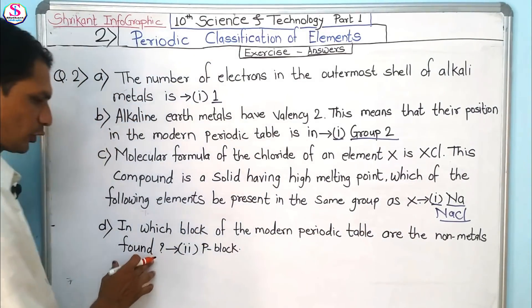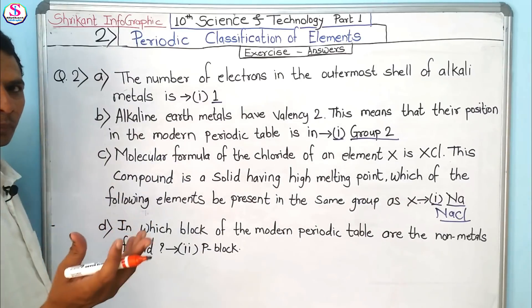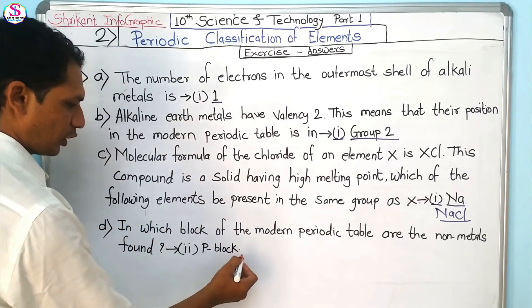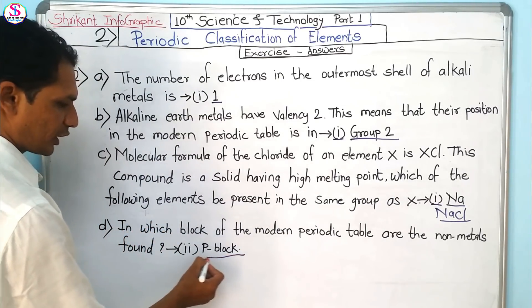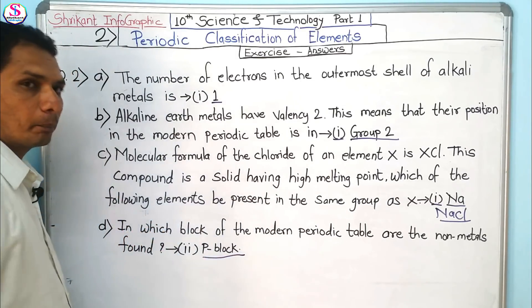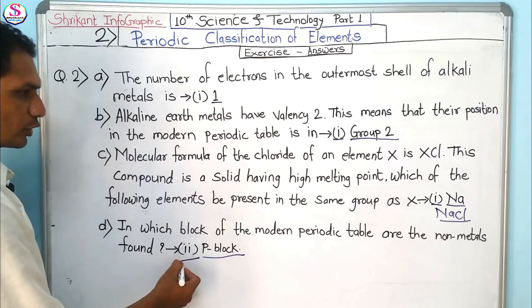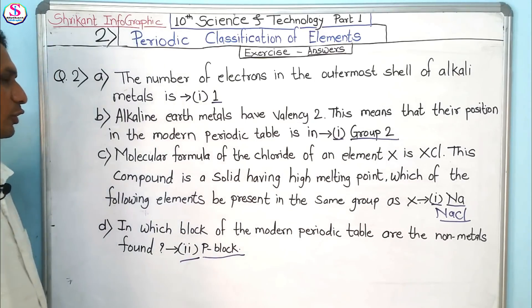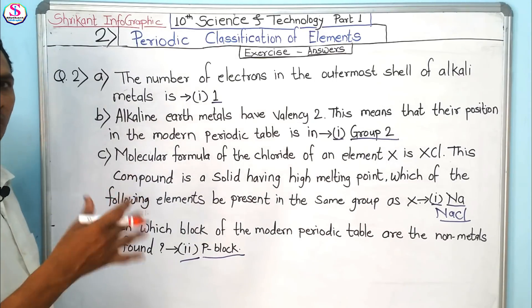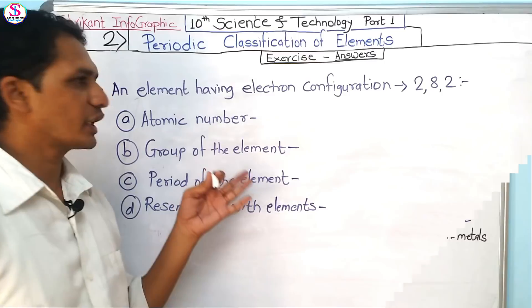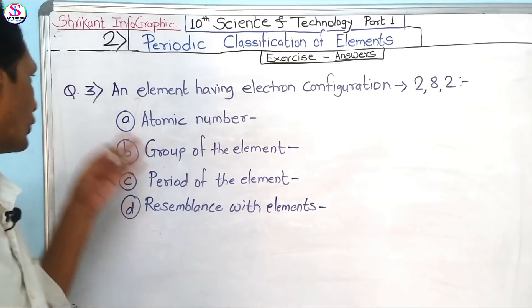If you observe the periodic table, you will find that all the non-metals are present in the P block — that is option 2. Now let's move to Question 3, which is a very simple question.